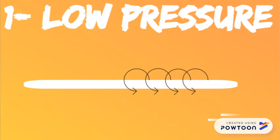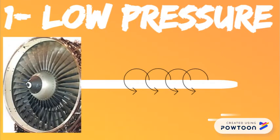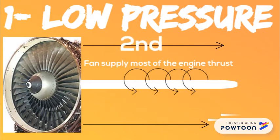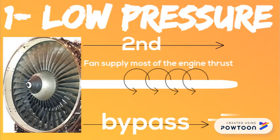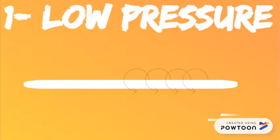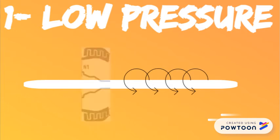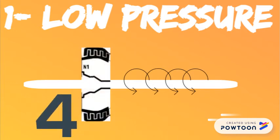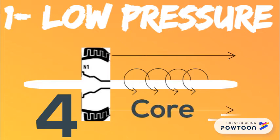The low-pressure rotor has the forward fan, which supplies most of the engine thrust. The air produced by this fan is known as the secondary airflow or the bypass airflow. The low-pressure rotor booster compressor is a four-stage compressor that supplies air to the engine core. This air is called the primary airflow.